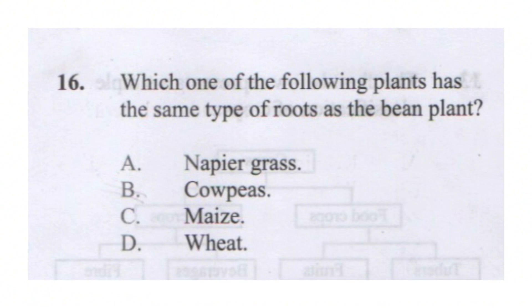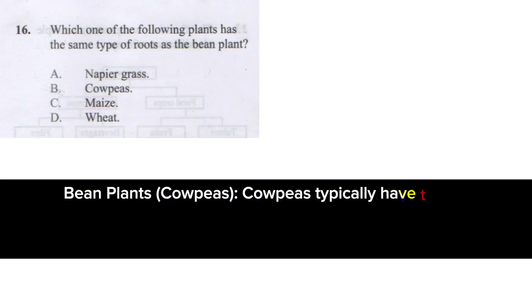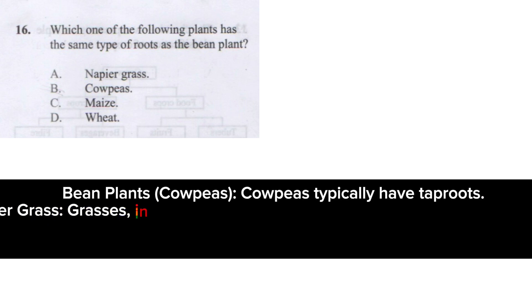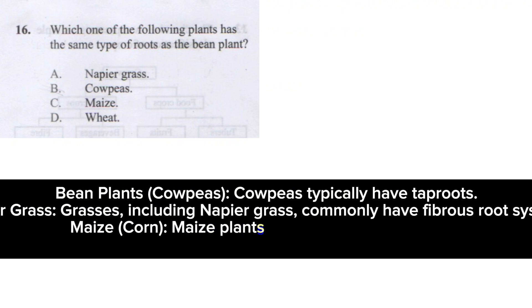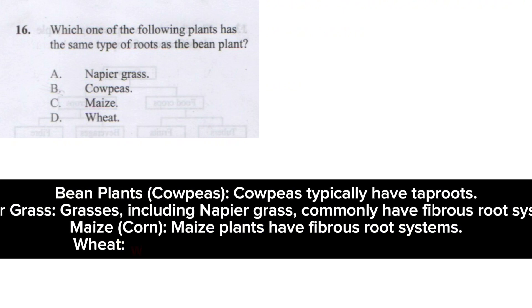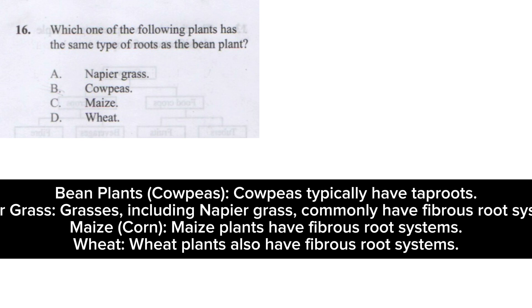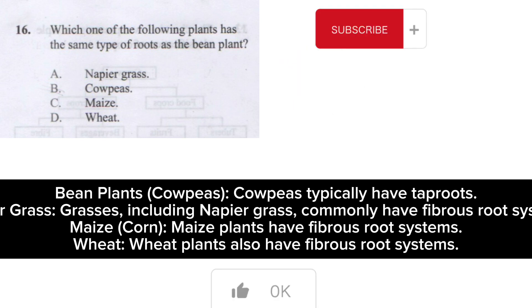Question 16: which of the following plants has the same type of roots as the bean plant? Bean plants together with cowpeas typically have tap roots. Napier grass and grasses generally have fibrous root systems, as do maize and wheat. So napier grass, maize, and wheat all have fibrous roots, while bean plants and cowpeas have tap roots. Our answer is cowpeas.